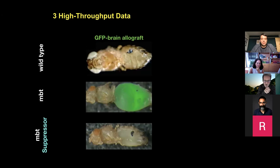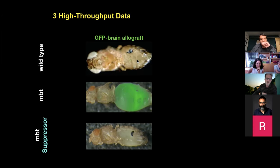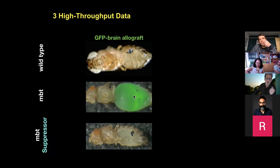Taking advantage of these tumor models, we are able to do what is standard technology in flies. One of the most powerful tools is carrying out very high-throughput screens. We have screened thousands of genes and identified suppressors. This is the wild-type condition — no tumor grows upon allografting a wild-type brain piece. This is the MBT case mutant: upon loss of function, massive growth occurs within the abdomen. And in this case, the brain is MBT mutant but also mutant for one of those suppressors — the tumor doesn't grow.